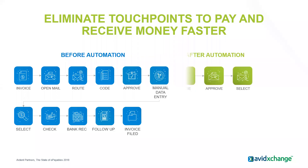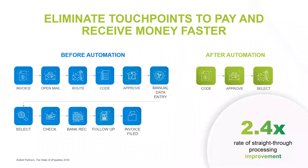After automation, the process is streamlined. In a normal manual process, someone has to open the mail, route it, code it, approve it, do manual data entry, select the payment type, do bank reconciliation, and file the invoice for later research. After automation, we consider only the true business decisions: coding, approving, and selecting. We take all those manual tasks out of the equation for you.